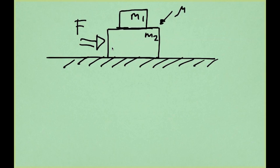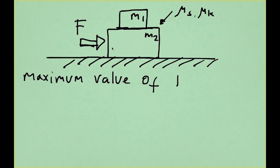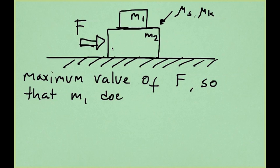We describe that friction with the parameters mu sub s for static friction and mu sub k for kinetic friction. The question we want to study is: what is the maximum value of the force F so that M1 does not slide?